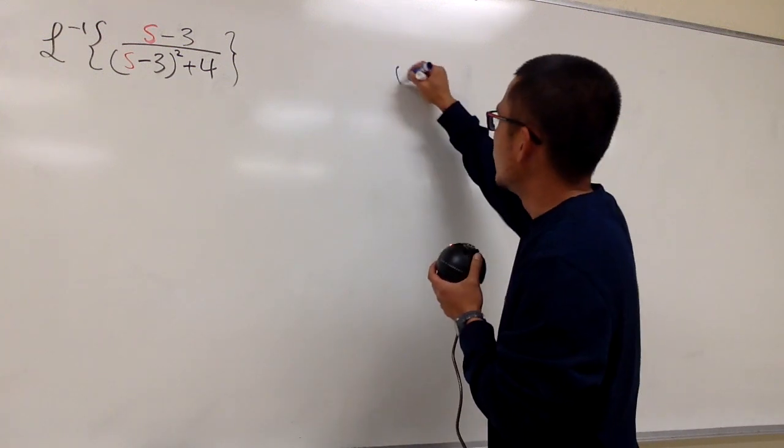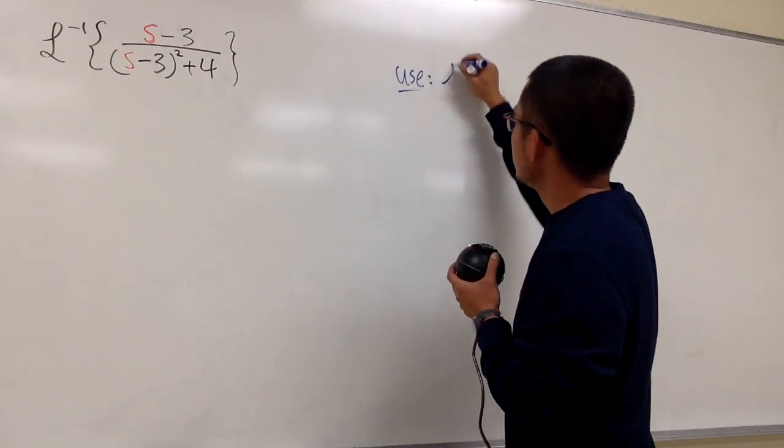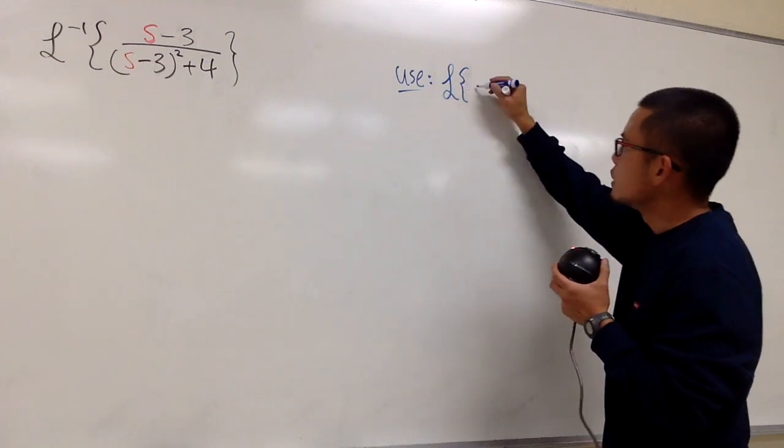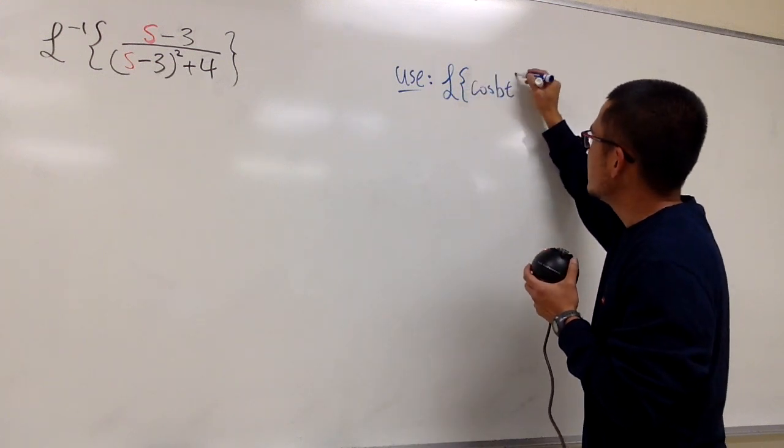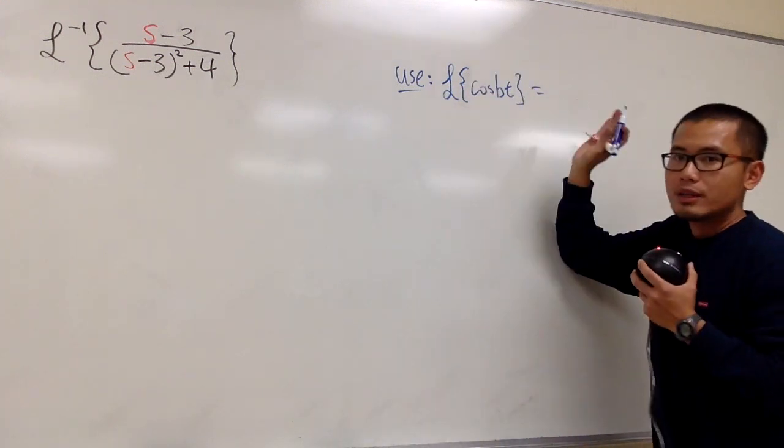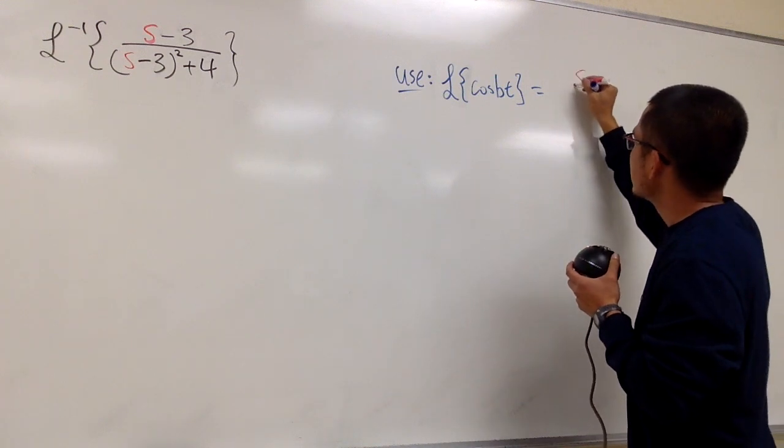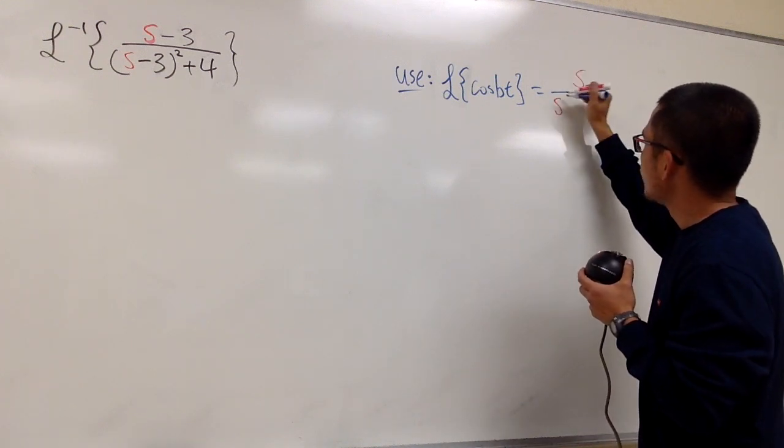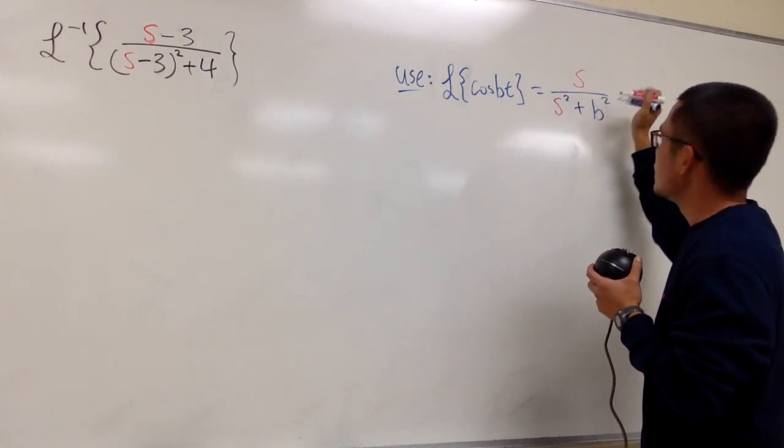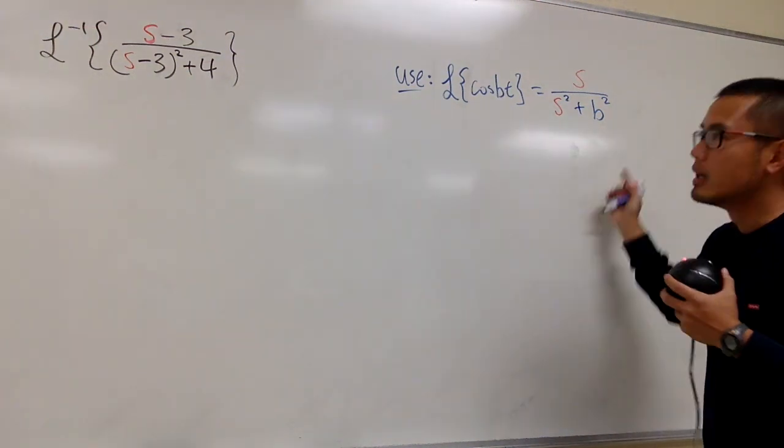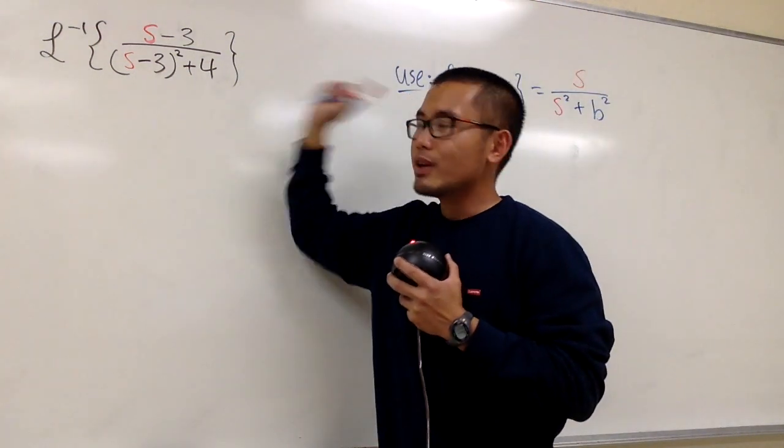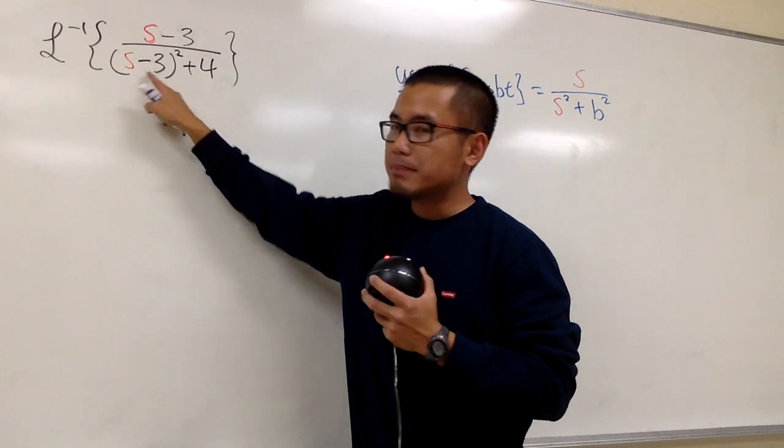Let me write down what we have right here. First, let's look at the Laplace transform of cosine of bt. As we know, this equals s over s squared plus b squared. However, that's not what we have. We have s minus 3 and s minus 3.